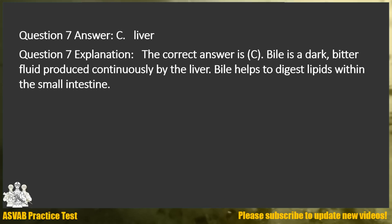Answer: C. Liver. Explanation: The correct answer is C. Bile is a dark, bitter fluid produced continuously by the liver. Bile helps to digest lipids within the small intestine.